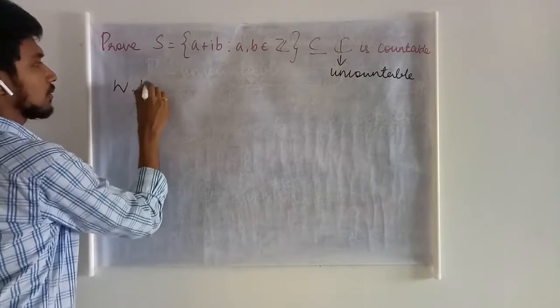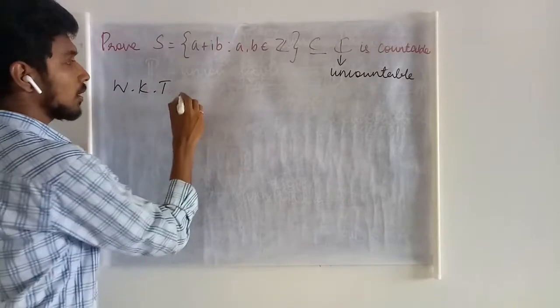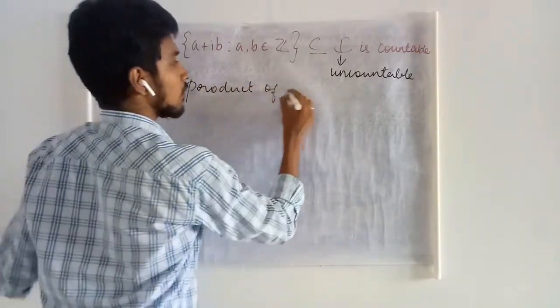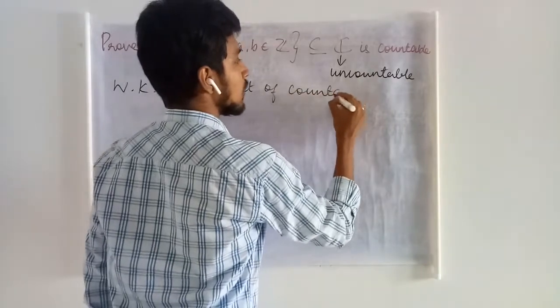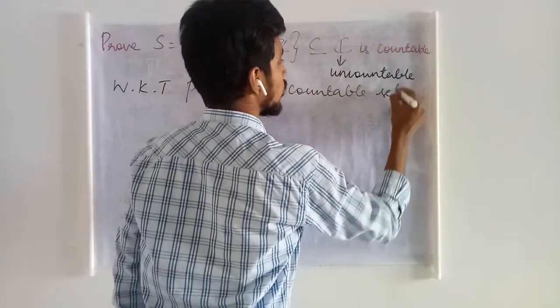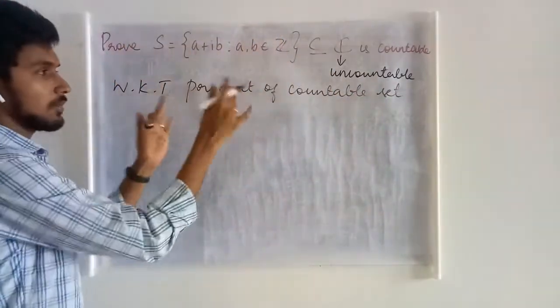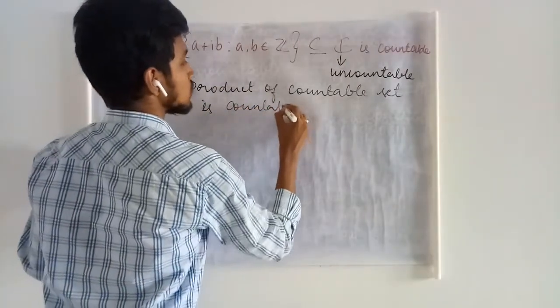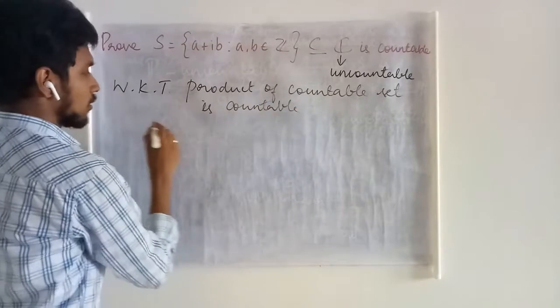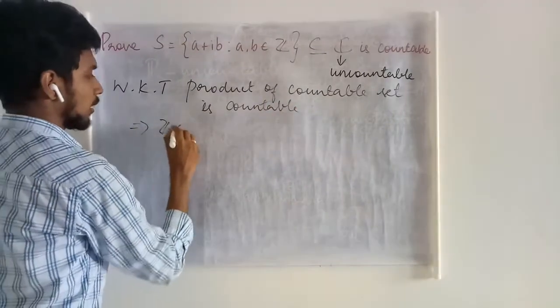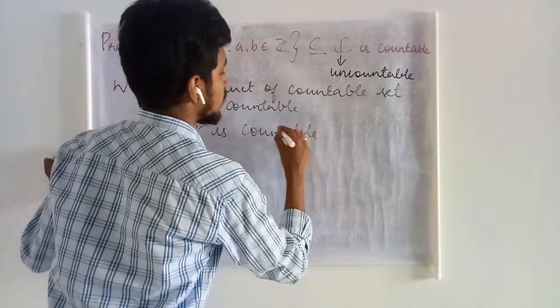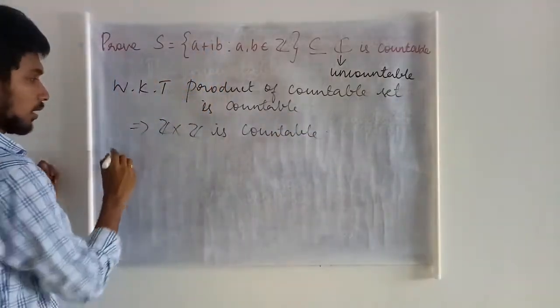We know that product of countable sets is countable, right? So, using that idea, we are going to do something here. Product of countable set is countable. So this tells you Z cross Z is countable, since the set of all positive integers is countable.